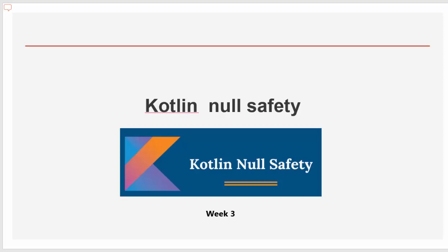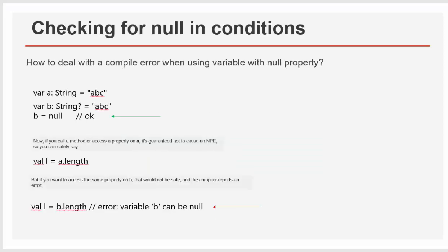I prepared very simple examples for you. So let's see the following example here right now. Variable a, type string, assigned to abc. Then variable b, string question mark, assigned to abc. Then b assigned to null is okay, right? Why? Because you could question mark. But now if you call the method access a property on a, what is a dot length, b dot length. Returns the length of the string, right? So if you're trying to access a property for a length, no problem.